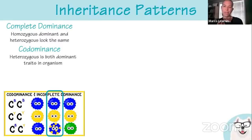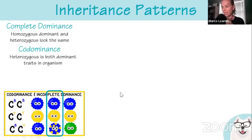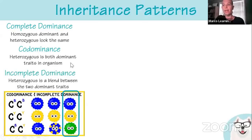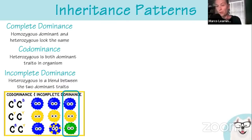With codominance, you'll see both traits at the same time in the heterozygous. If you have the B allele you're blue, the Y allele you're yellow, so having both gives you both blue and yellow. We see codominance a lot with blood typing — AB blood means the individual has both the A and B allele, so you see both glycoproteins on the red blood cell membrane. With incomplete dominance, the heterozygous is a blend — blue and yellow mixed gives green. We usually see that example with snapdragons: red, white, and pink flowers.